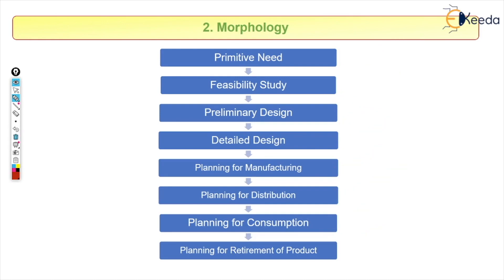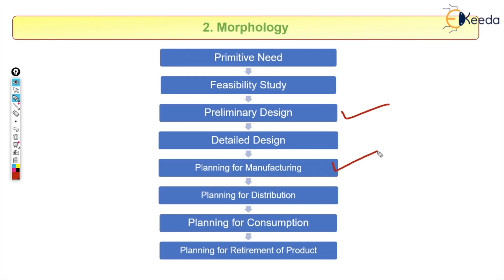It starts with the primitive idea or need and ends with the retirement or expiry of the product. If we check these points, the preliminary design, specification list from methodology, and planning for manufacturing — these three points cover everything about methodology. This section comes under methodology.